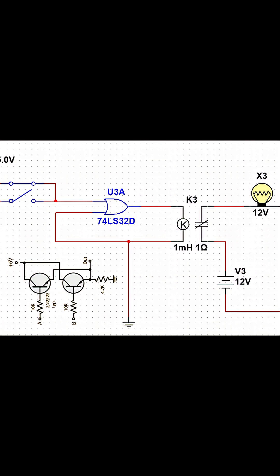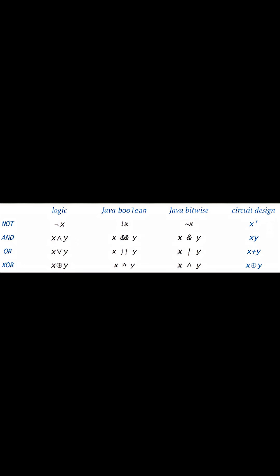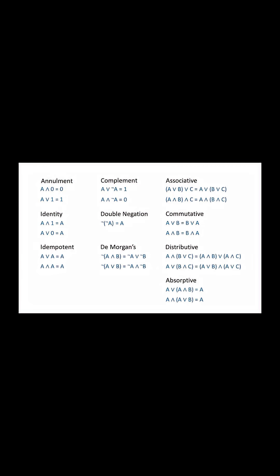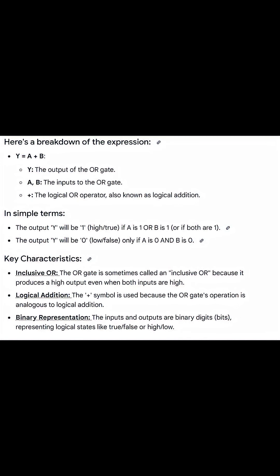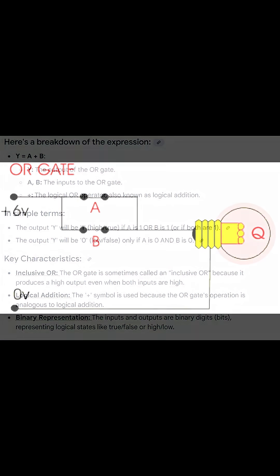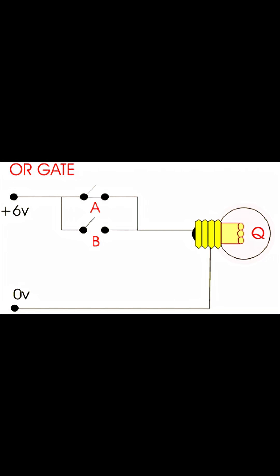In Boolean form, this is written as output equals A∨B, or spoken as A or B. In Boolean shorthand math, A plus B — note that plus means OR, not addition in Boolean. Only one situation gives 0 as an output: when all inputs are 0.